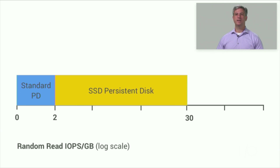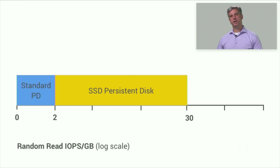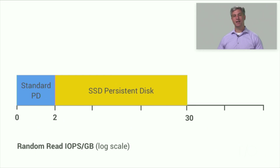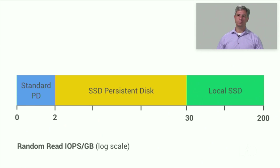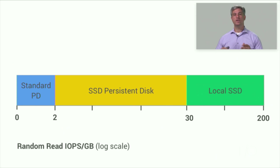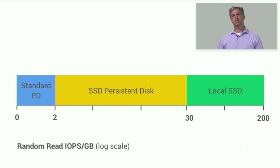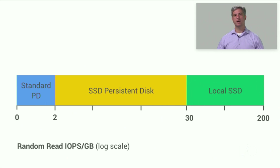The second option, SSD Persistent Disk, is now in general availability. It's like Standard PD, but backed by networked SSD. As a result, you have a higher cost, but a higher performance per gigabyte. Use it like you would Standard PD, but in cases where you need between two and 30 IOPS per gig. The third option is not yet generally available, but is now accepting trusted testers. It's a local SSD option. It offers the highest possible performance, but has availability, durability, and flexibility trade offs I'll discuss shortly.